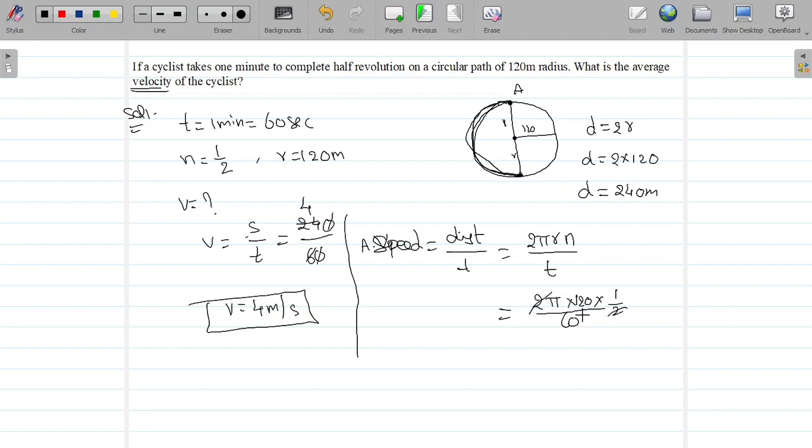2 gets cancelled, 60-2-0. It is 2 pi meters per second. Or if you want, you can substitute pi value as 3.14. Average speed equal to 2 pi meters per second. Average velocity is 4 meters per second. Thank you.